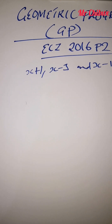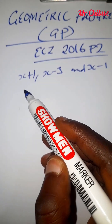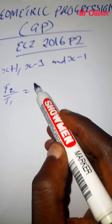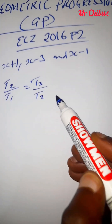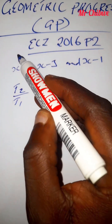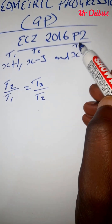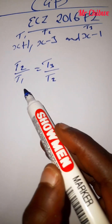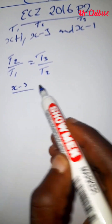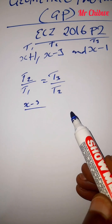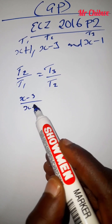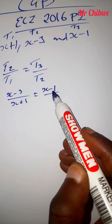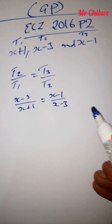To find the value of x, you use proportions for calculating the common ratio. It will be T2 divided by T1, which is equal to T3 over T2. So according to this question, T1 is x plus 1, T2 is x minus 3, and T3 is x minus 1. We substitute: (x minus 3) over (x plus 1) equals (x minus 1) over (x minus 3), then you cross multiply.